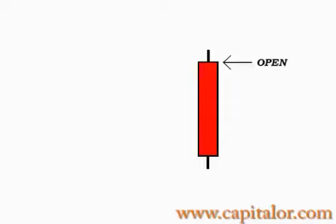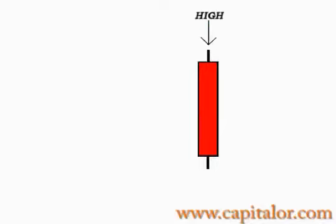On a negative candlestick, the open is the upper part of the negative candlestick's real body, and the open is the price at which the candlestick first began to form. The line which is above the negative candlestick's real body is also called the shadow, and the furthest point of the upper shadow is called the high — the highest price reached during the time this particular candlestick was formed, same as with a positive candlestick. The close for a negative candlestick is the bottom of the candlestick's real body, and the close is the price where that specific candlestick stopped forming and another candlestick instead began to form beside it.